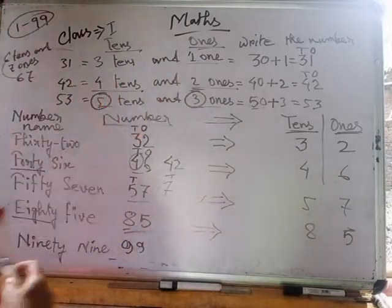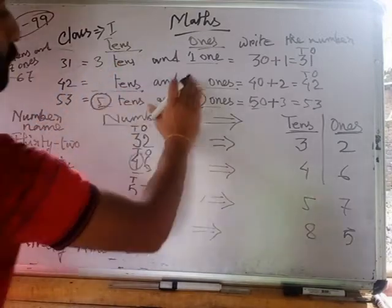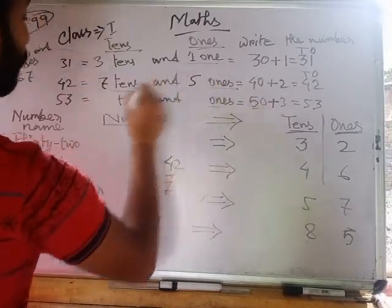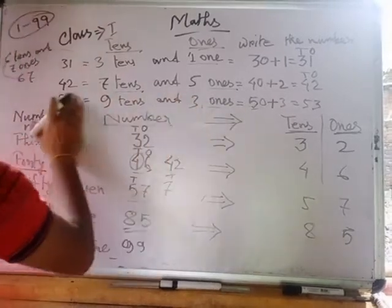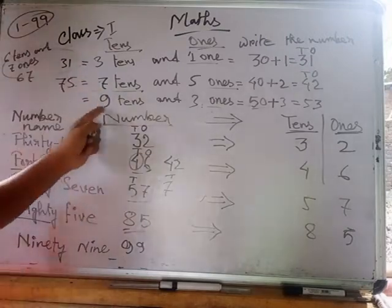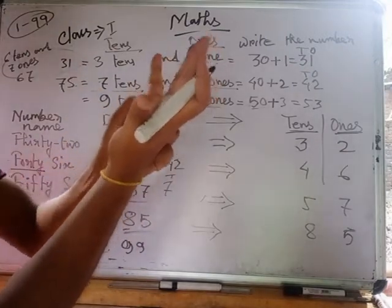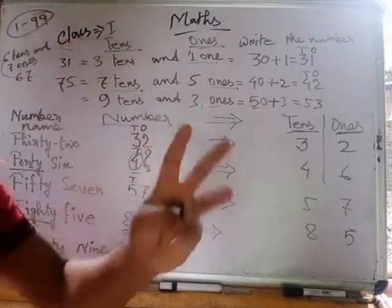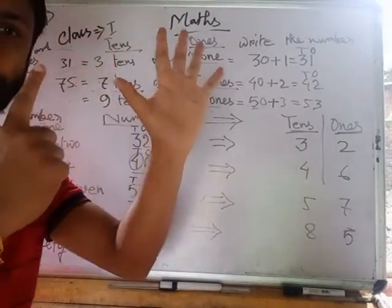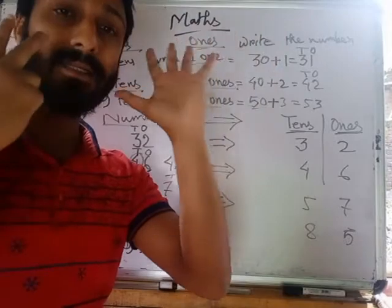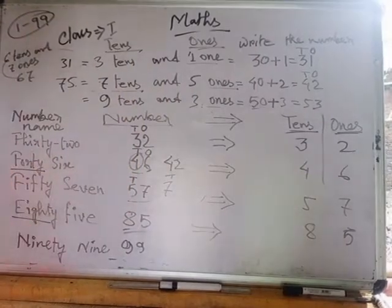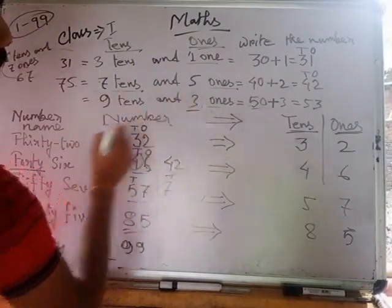For example, 75 means 7 tens and 5 ones. For 93, 9 tens means 90. Let's review: 3 tens is 30, 4 tens is 40, 5 tens is 50, 6 tens is 60, 7 tens is 70, 8 tens is 80, 9 tens is 90. So 9 tens and 3 ones means 93. We should write 93.